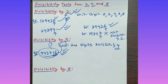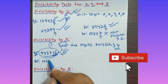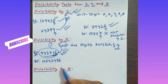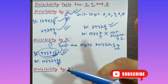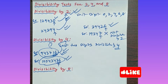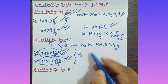One more example: take the large number 1054336. Check the last two digits — that is 36. Is 36 divisible by 4? Yes, 36 is divisible by 4. So this whole number is also divisible by 4.